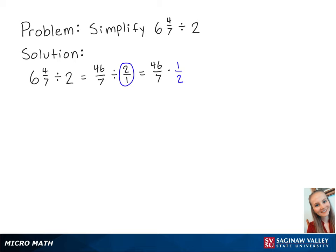When we multiply two fractions, we multiply the numerators and the denominators. We can do this by merging the fractions into 1. So this equals 46 times 1 over 7 times 2.